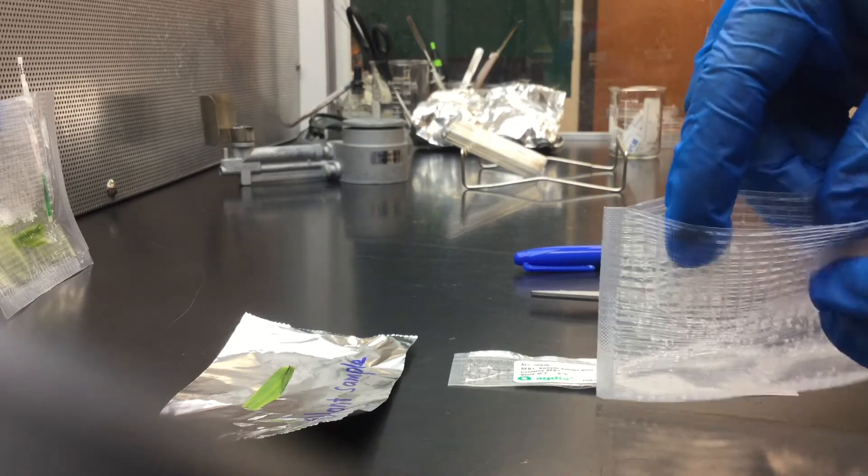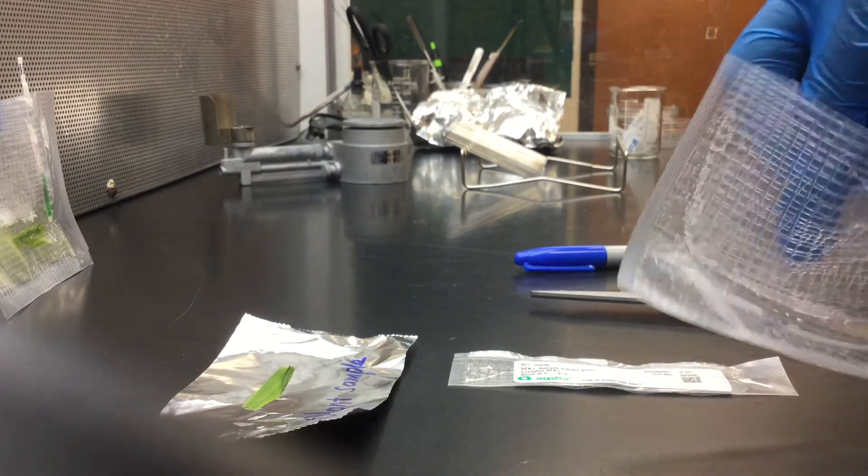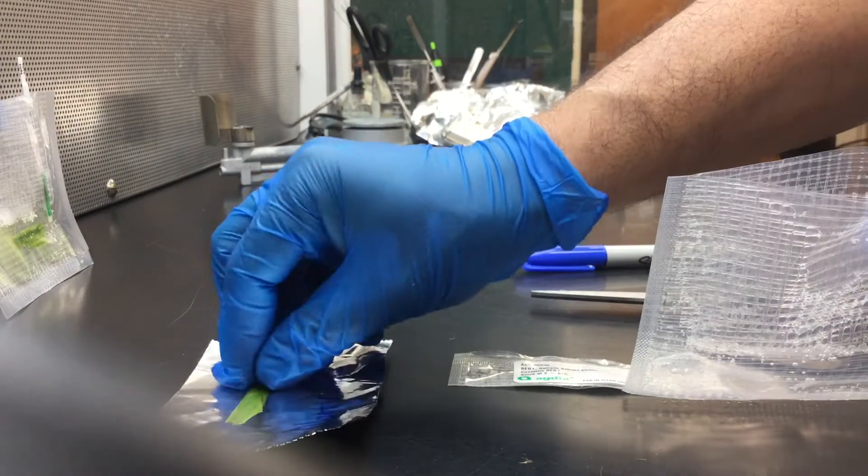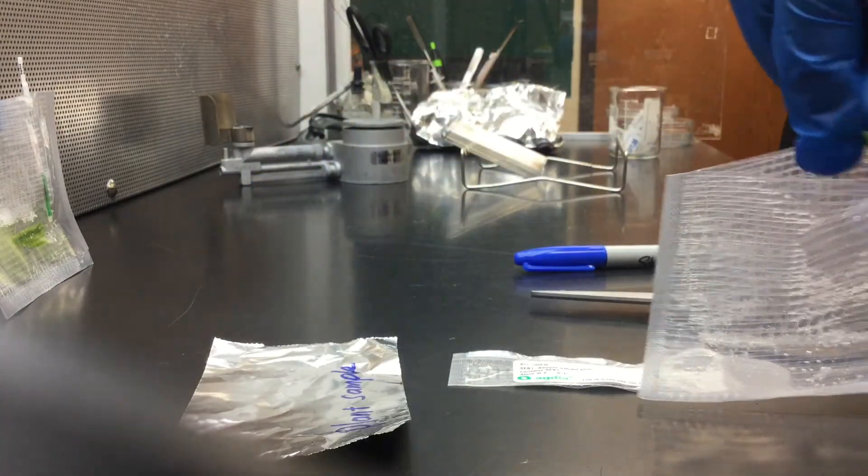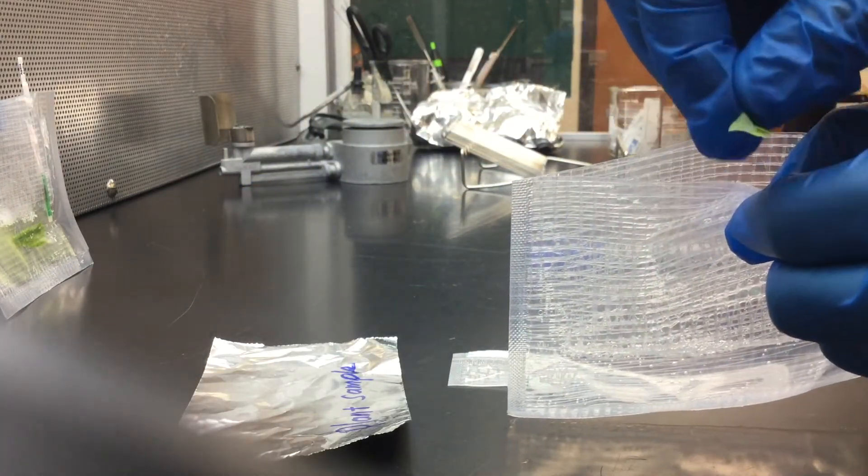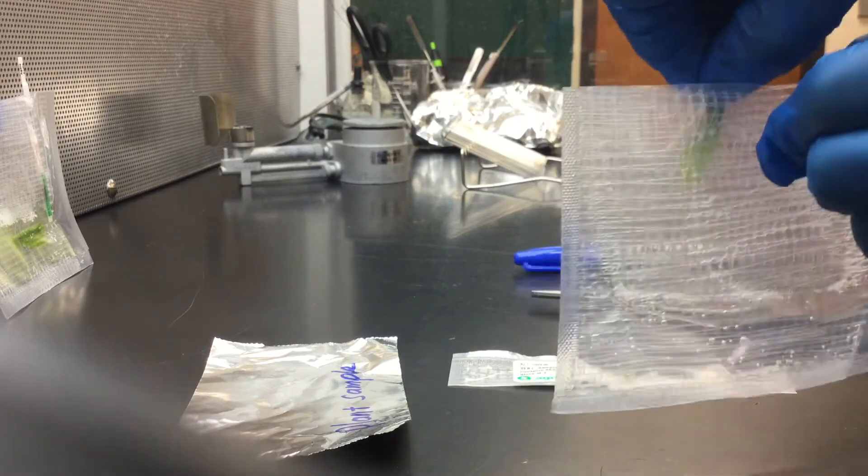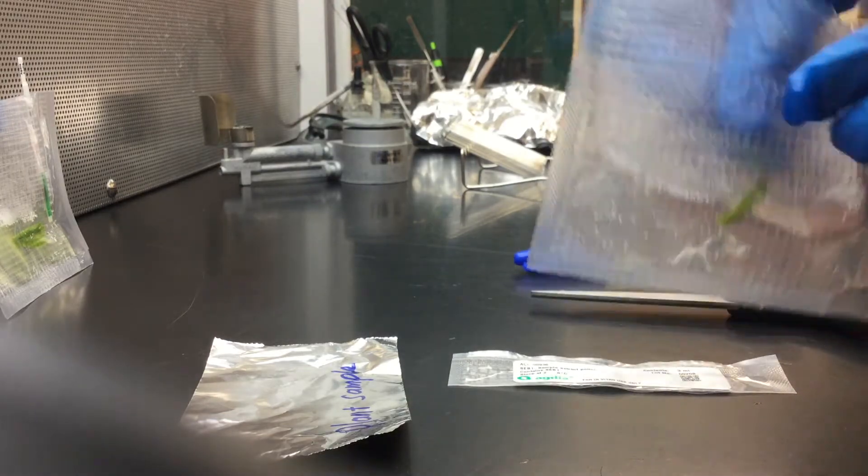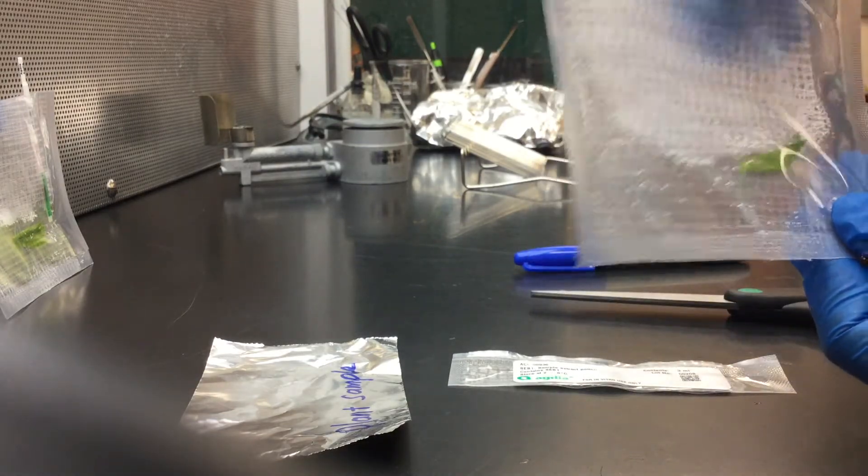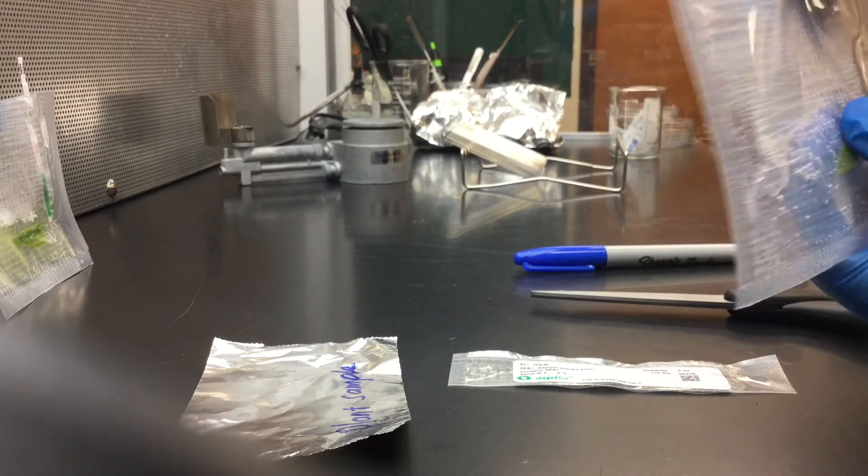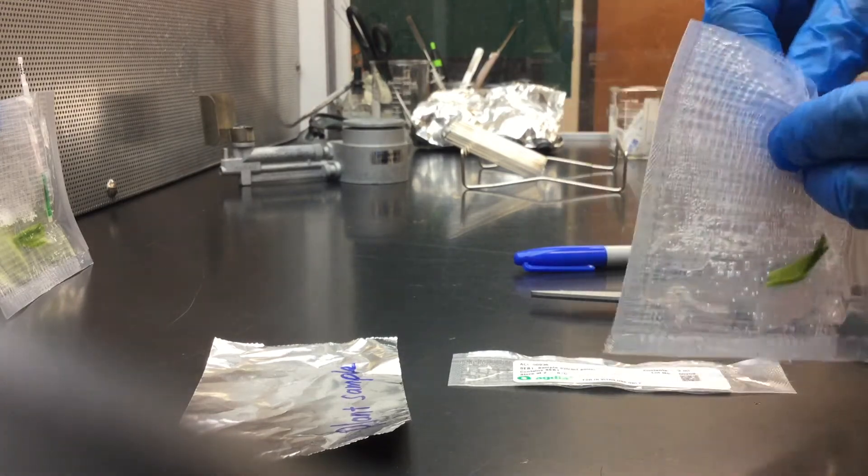Insert the leaf sample between the mesh lining into the buffer near the bottom of the bag so that the leaf sample is submerged in the buffer.